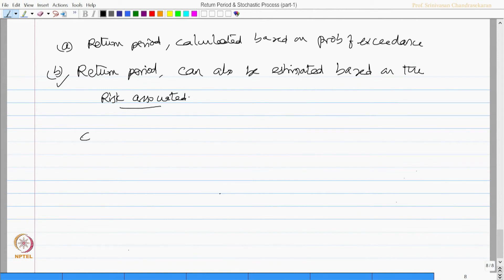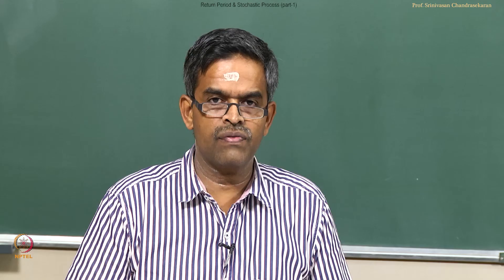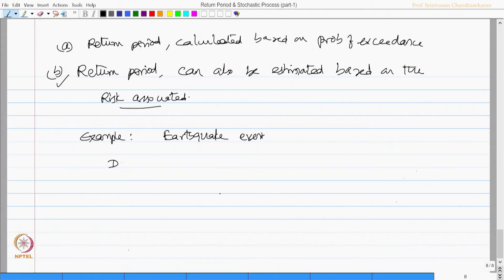Let us now see how to estimate return period based on risk associated. We will take an example of an earthquake event. Let us say there are different levels of earthquake considered for design of strategic structures like offshore structures. Design basis earthquake which has got 10 percent risk at occurrence of 50 years, maximum credible earthquake which is 2 percent risk at occurrence of 50 years.